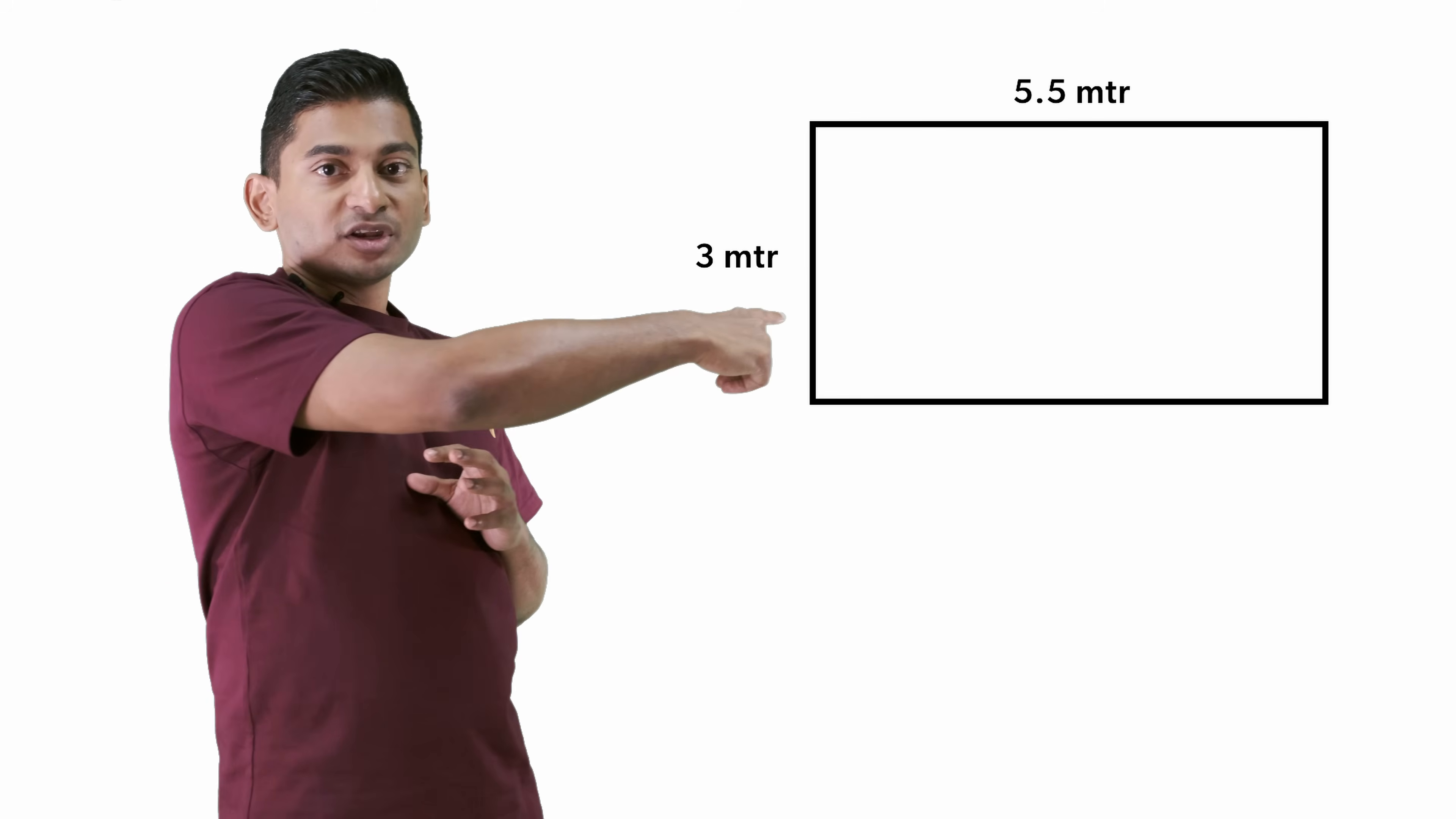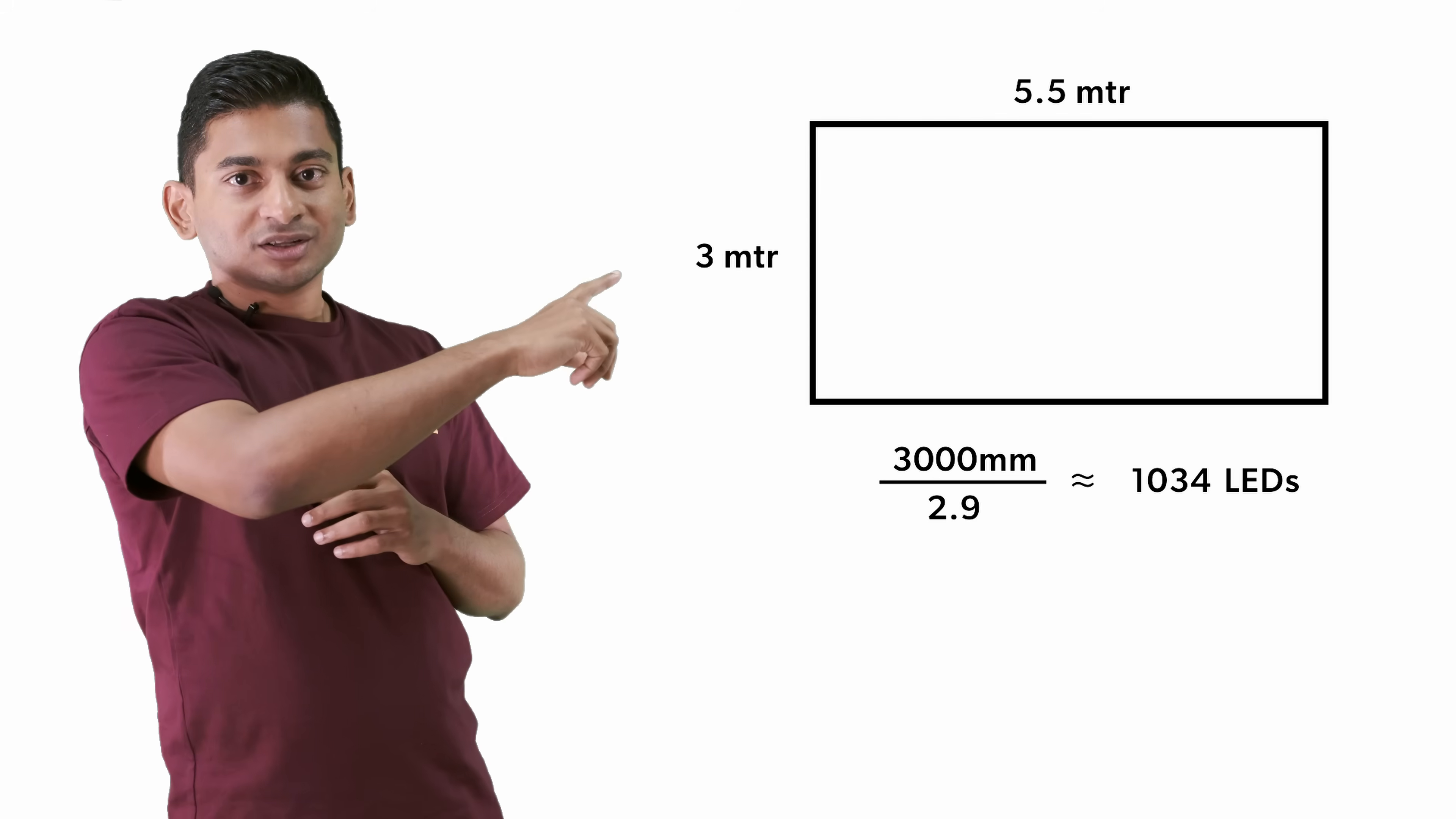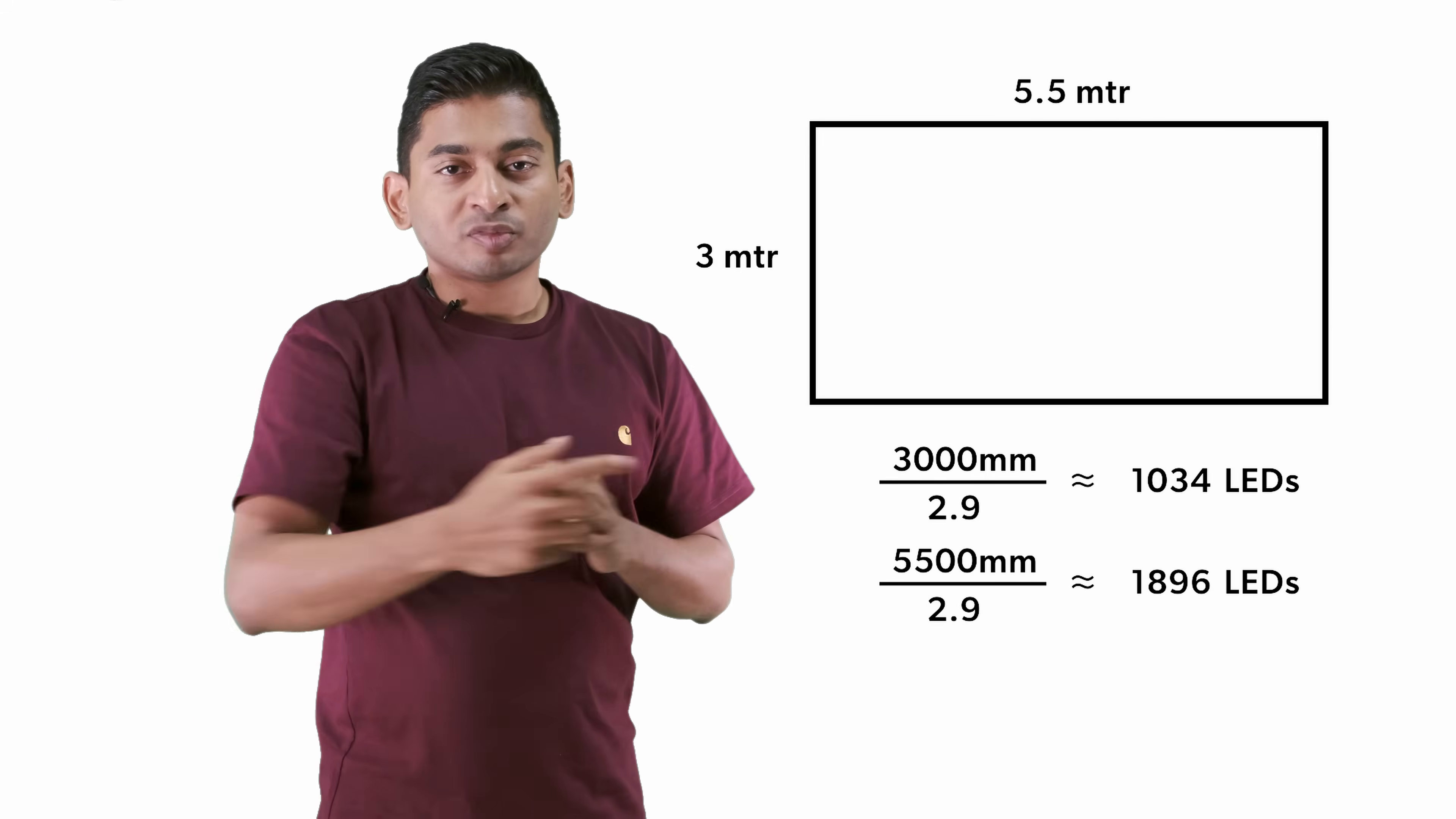For example, the demo screen we have in our premises is 3 meters in height and 5.5 meters in length. To arrive at the pixels in this 3 meter by 5.5 meter screen, you have to take 3,000 millimeters divided by 2.9, that's roughly 1,000. Then you have 5,500 millimeters on the length divided by 2.9, which is roughly 2,000 on the horizontal.